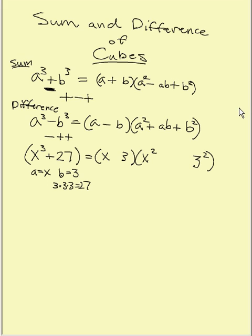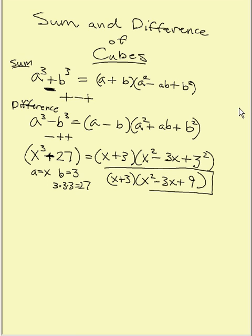And then in the middle is going to be a times b, or in other words x times 3, or you can write it 3x. Now is this a plus or is it a minus? This is a plus. So since this is a plus, you're going to do the sandwich: plus minus plus. Great. And then when you simplify this you're going to get x plus 3, multiplied by x² minus 3x plus 9, and 3² which is 9. And that is the answer my friends.